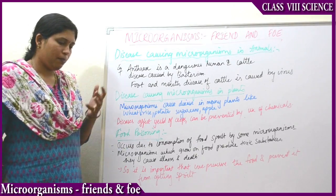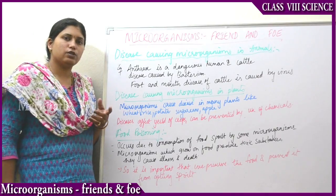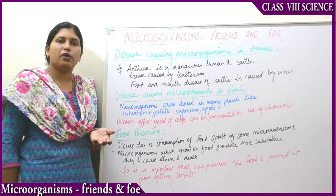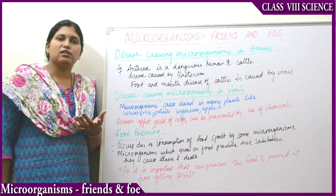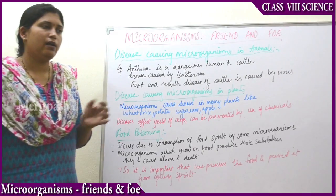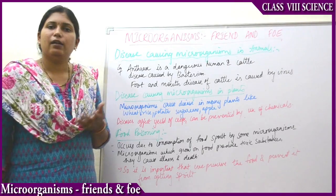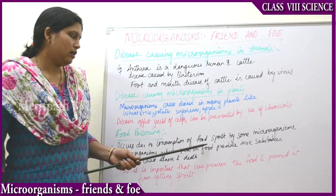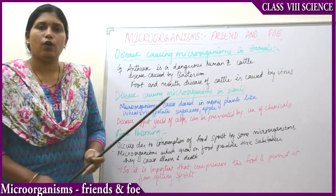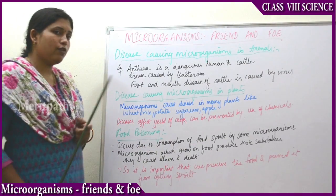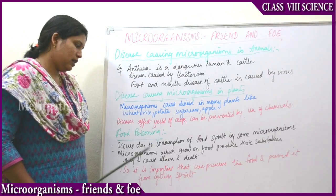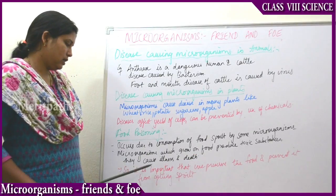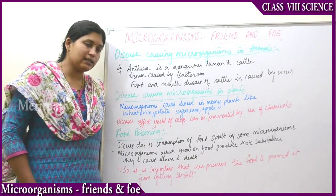Next is food poisoning. Sometimes if you eat food outside or on the street side, you get vomiting — that is nothing but food poisoning. It happens due to consumption of food contaminated by microorganisms. The microorganisms which grow on the food produce toxic substances and they cause illness and sometimes even death.